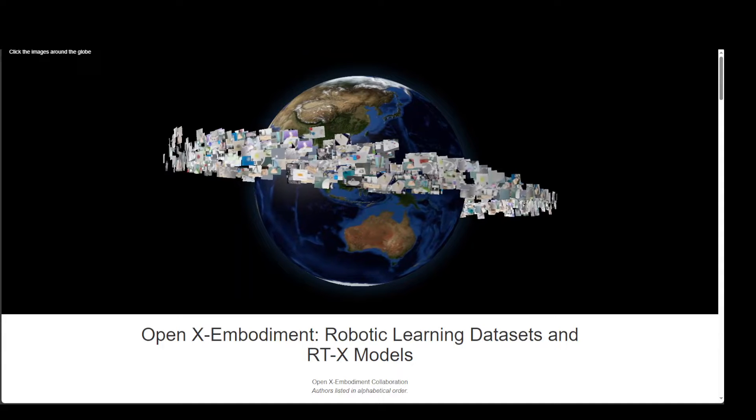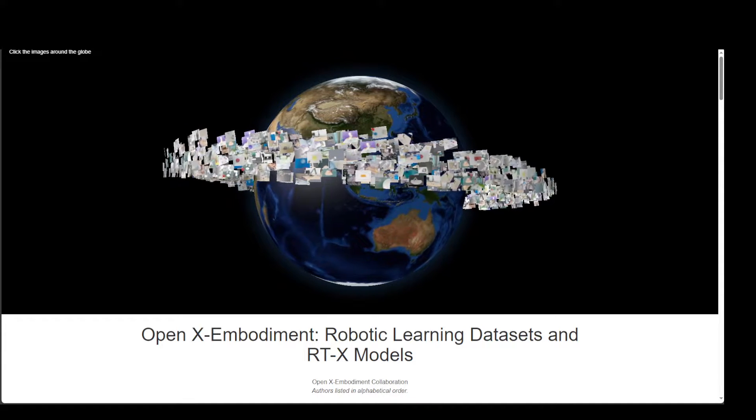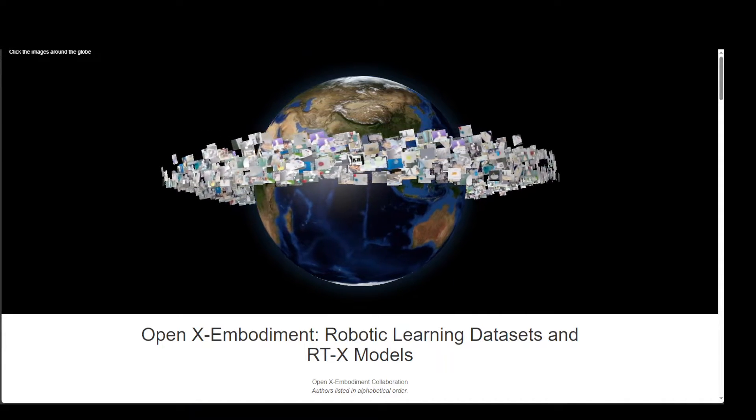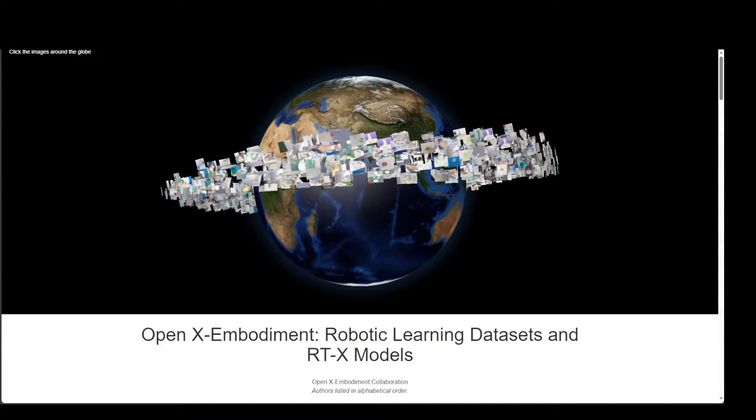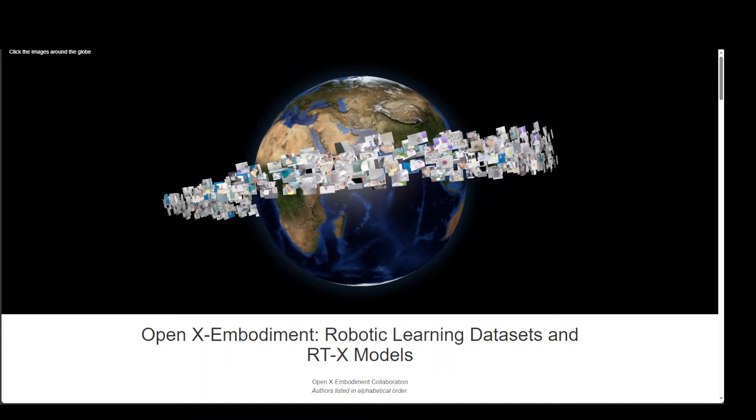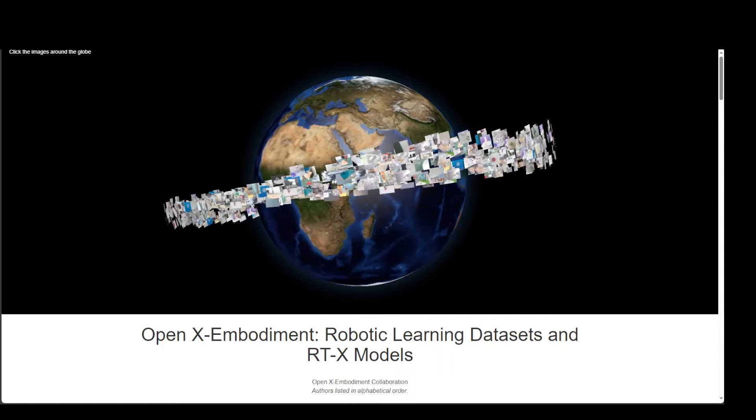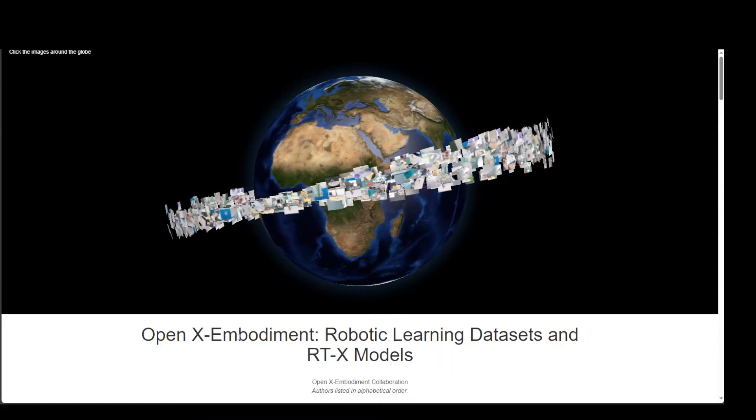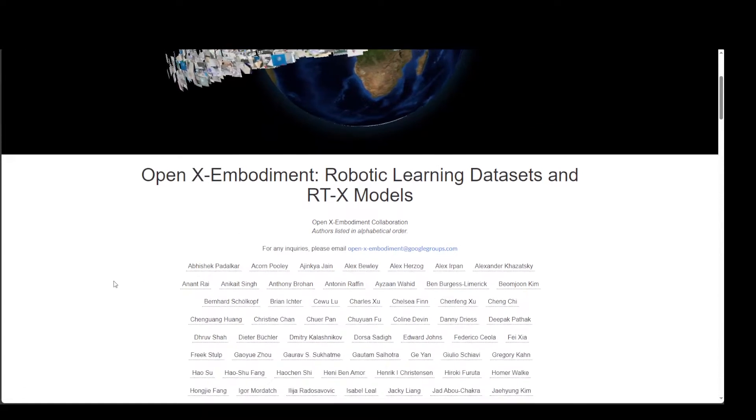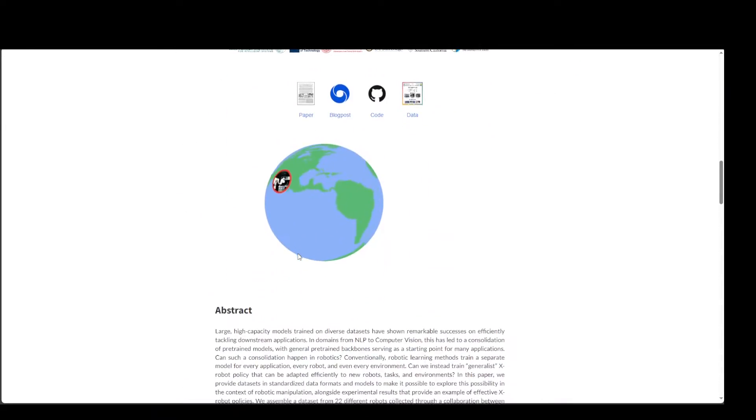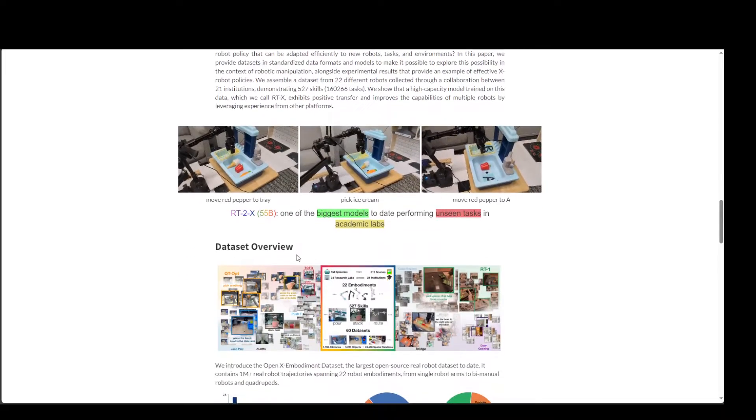As I mentioned, it is using a very comprehensive dataset developed with 20 institutions, capturing 500 skills and 150,000 tasks from diverse robotic types. On your screen, you can see the website and all of these researchers, plus the detail about what I'm describing.